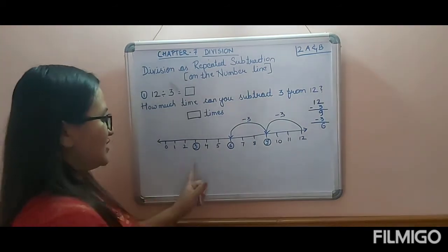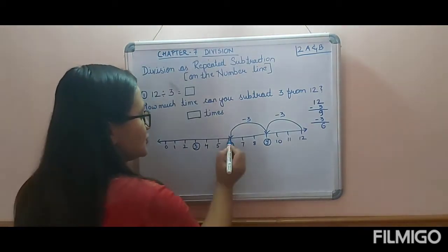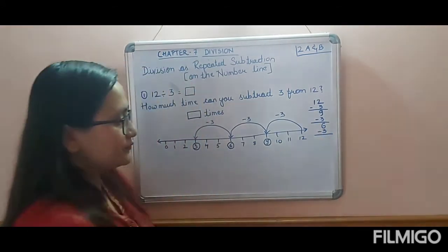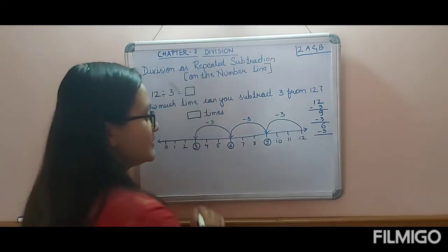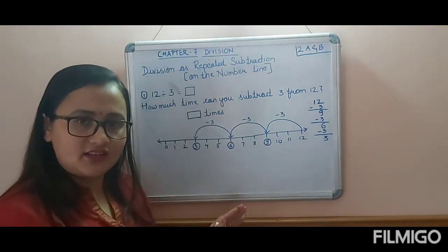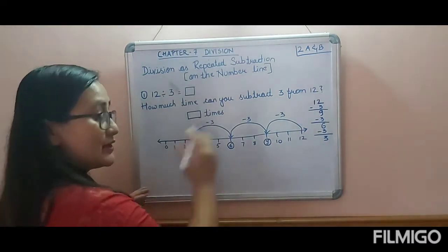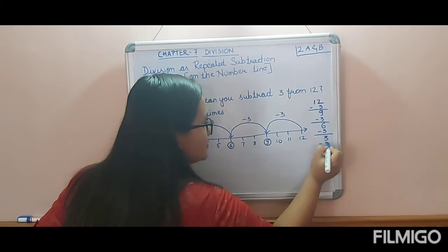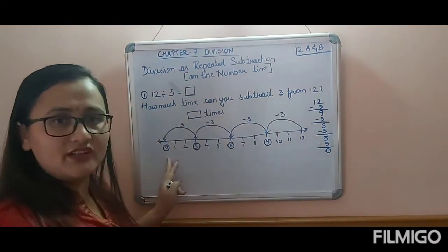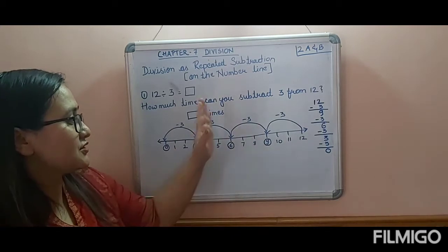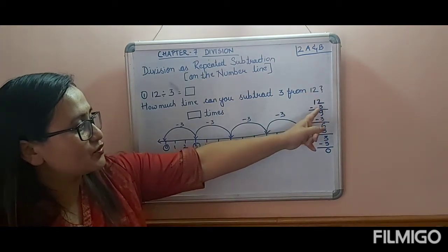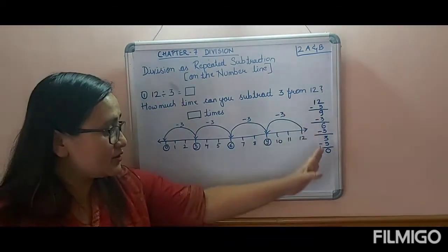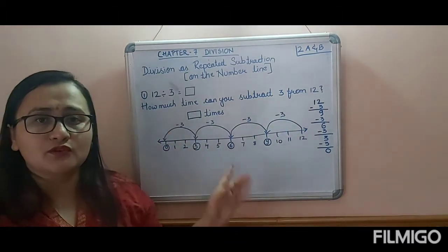We have jumped to 6, so again count back one, two, three — put your circle and jump to 3. Write minus 3. Then 6 minus 3 equals 3. From 3, jump back one, two, three to reach 0. Write minus 3. And 3 minus 3 equals 0. You have reached 0 on both the number line and through repeated subtraction.